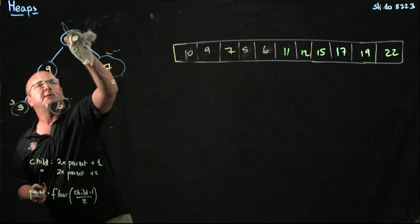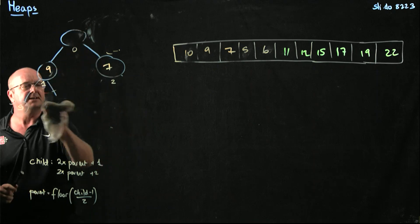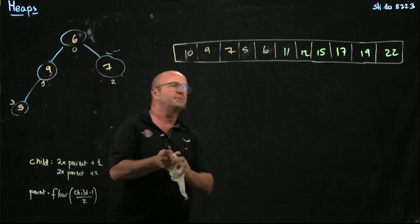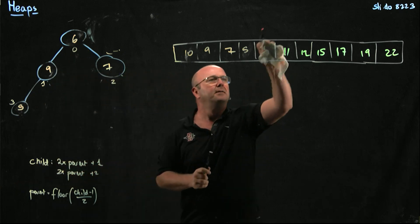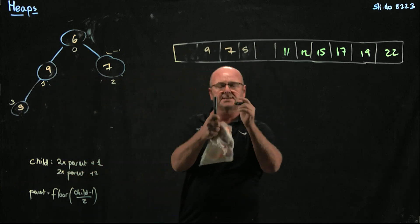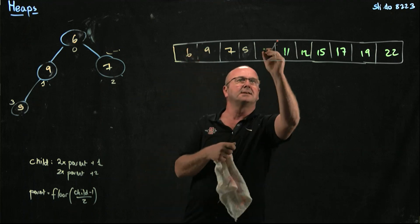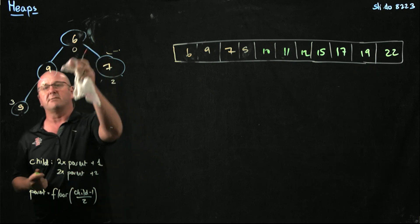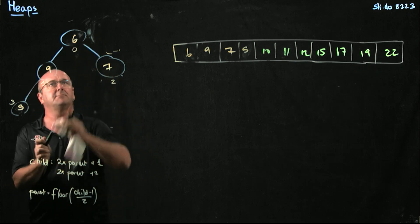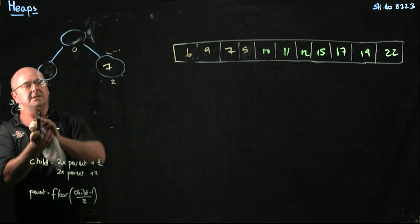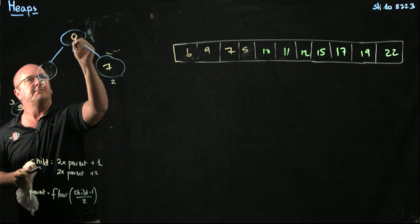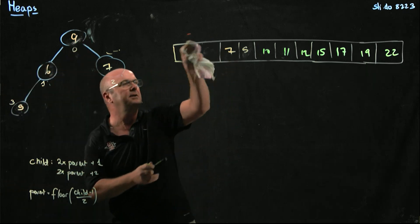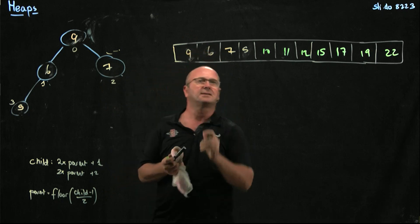We're going to take away the 10. The way that we take away the 10 is we swap it with the 6. We put the 6 up there, take away the 10 and the 6 — here's the 6, here's the 10. We've got to re-correct the heap. We just swap the 6 and the 9. Now we've got the 9 and the 6.